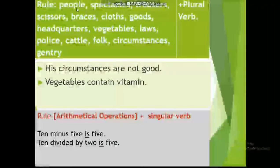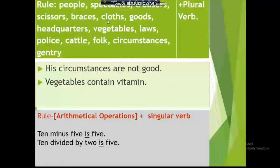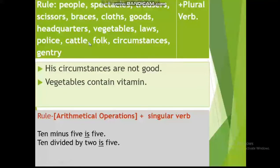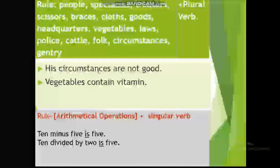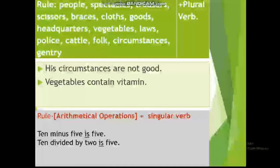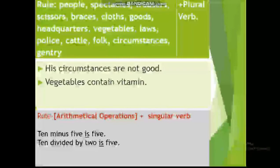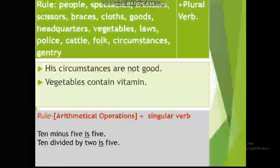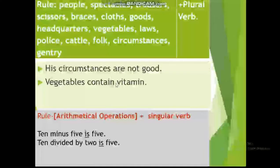Another rule: words like people, spectacles, scissors, breaks, clothes, goods, headquarters, vegetables, laws, police, cattle, folk, circumstances, gentry — after all these, the verb must be in plural form. Example: 'His circumstances are not good' — 'circumstances' takes plural verb 'are'. But note: 'The vegetables contain vitamins' — 'vegetables' is a regular plural here and takes plural verb 'contain'.